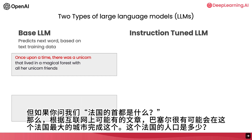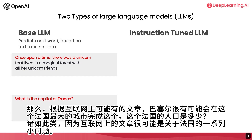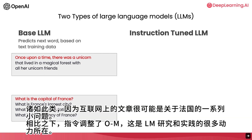But if you were to prompt it with 'what is the capital of France,' then based on what articles on the internet might have, it's quite possible that the base LLM will complete this with 'what is France's largest city, what is France's population,' and so on. Because articles on the internet could quite plausibly be lists of quiz questions about the country of France.